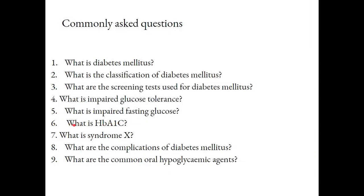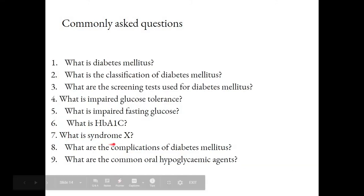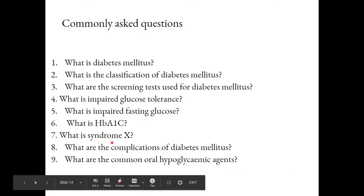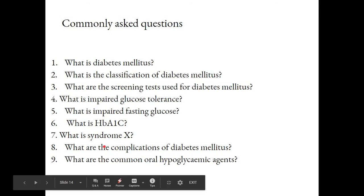What is HbA1c? HbA1c is glycosylated hemoglobin. It gives an idea of long-term glucose control, reflecting the mean glucose level over the red blood cell lifetime. Syndrome X (metabolic syndrome) is characterized by hyperglycemia, hyperinsulinemia, dyslipidemia, and hypertension.